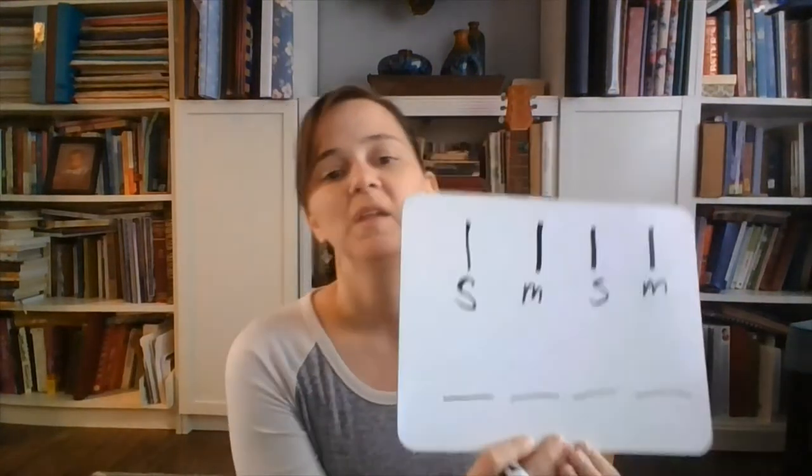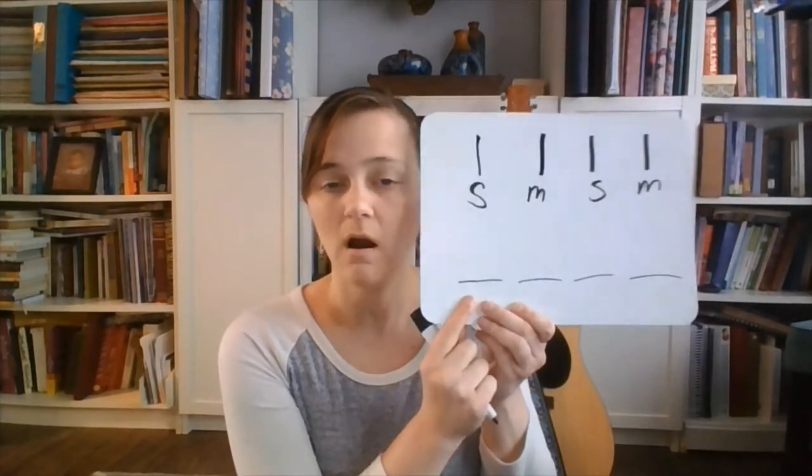We have something other than tas now. We're hearing two sounds on some of the beats. Again, this phrase is four beats, so I'm going to write the four beats to help us track our place here. And let's sing it again, and I'll point to how many sounds we hear on each beat.